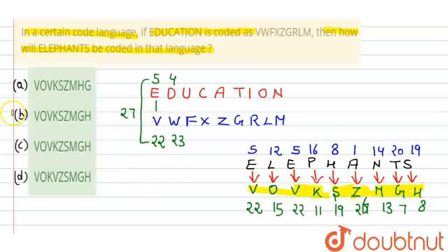If we look at the options, which one will be correct? Option B will be correct: V O V K S Z M G H. Thank you.